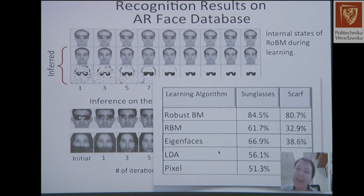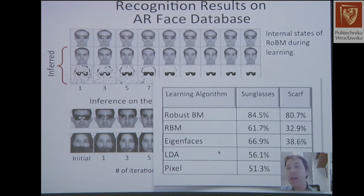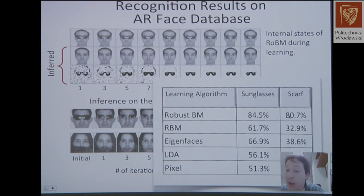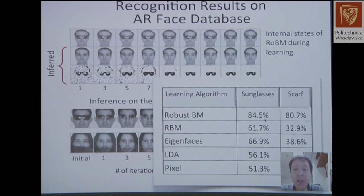The interesting thing is you can get huge performance gains by putting this structure into the model. We're not asking the model to magically figure out hidden units — we're specifying that there's a mask and a face. Using the robust version of Boltzmann machines, accuracy goes to 80%. Using standard restricted Boltzmann machines without that structure, accuracy is around 32%. There's also a huge gap in performance for sunglasses.